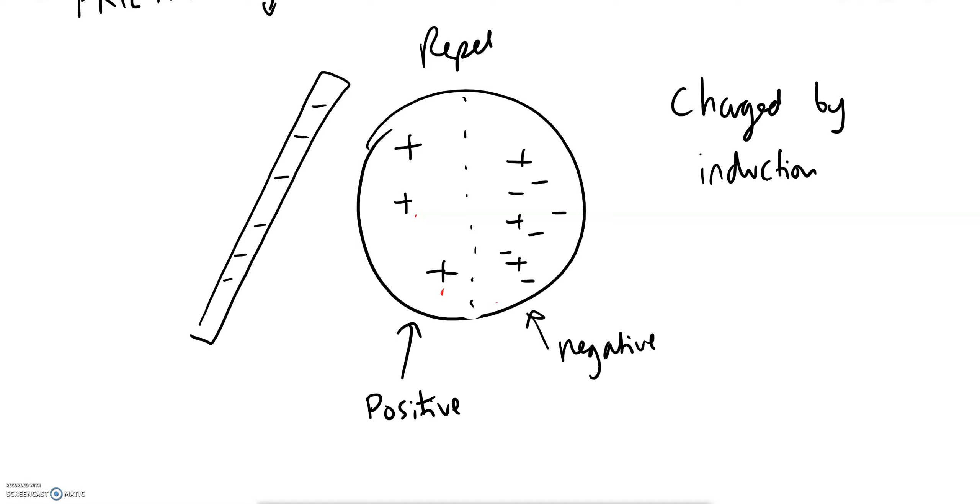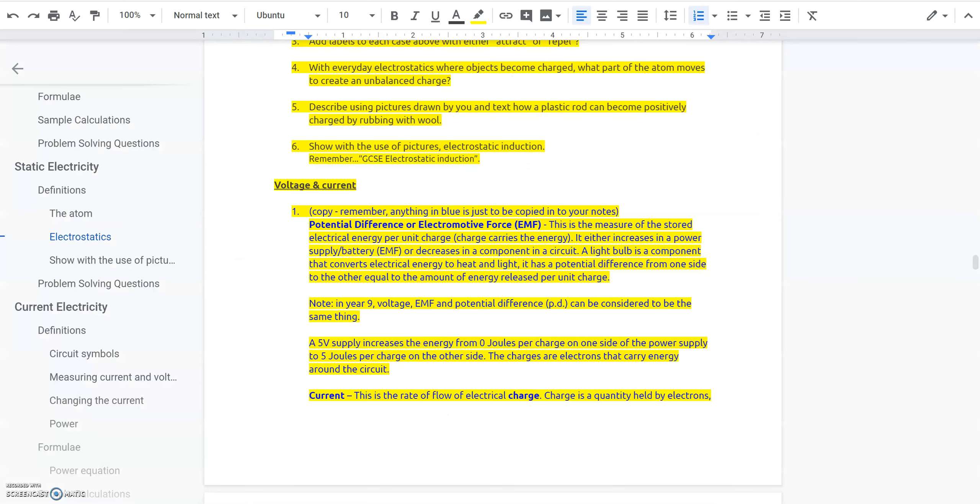Overall you might notice actually if you count the number of positives and negatives in this dome you see that actually it's still neutral overall, but this half is positive and this half is negative. And that's how charging by induction works.